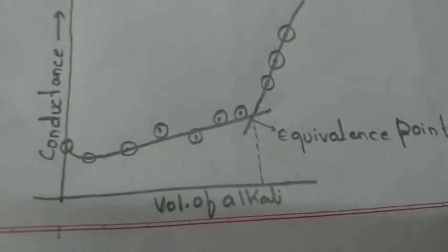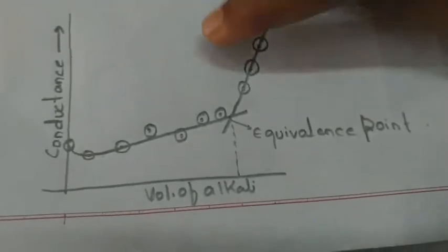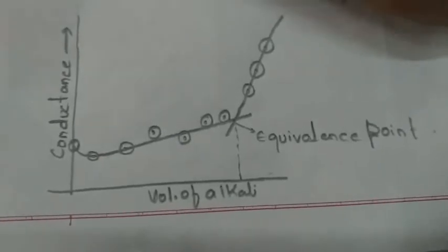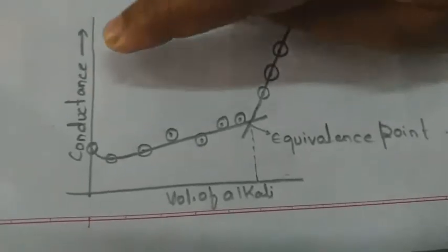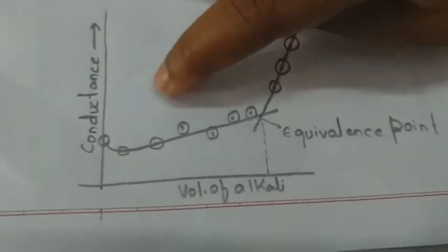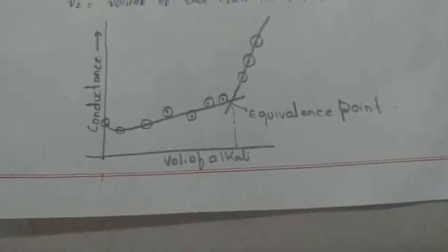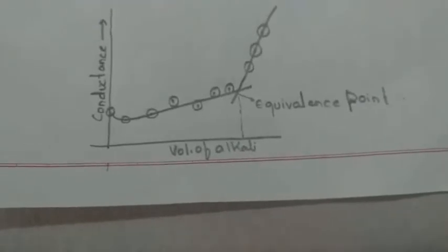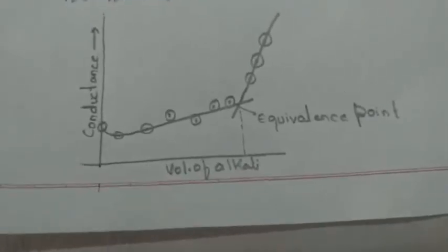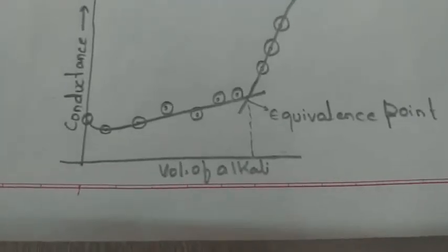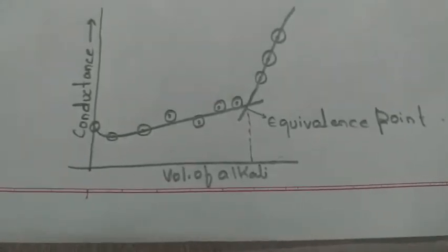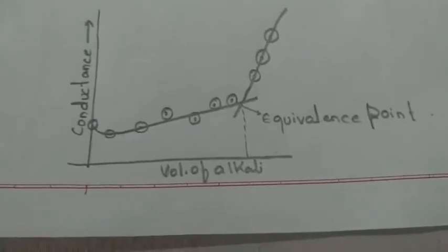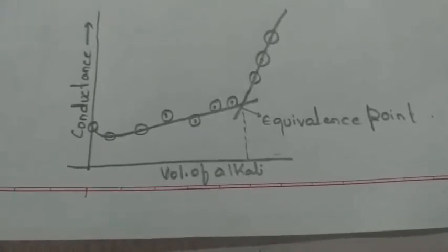For weak acid versus strong base, the graph is drawn taking volume of base on the X-axis and conductance on the Y-axis. There is a drop in the beginning and then it increases sharply. During conductometric titration of weak acid by strong base, the points in the graph near the end point do not fall on a straight line but make a curve. This is due to hydrolysis of the salt, which produces some OH⁻ ions and raises the conductance value from the expected value.